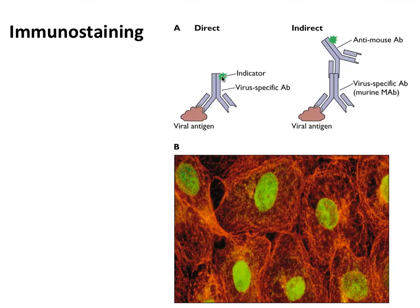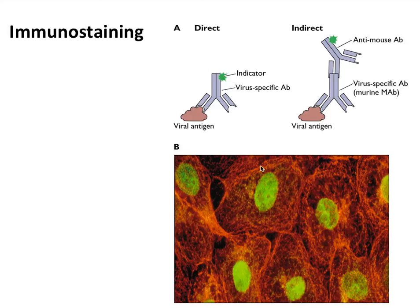You can label the antibody itself with a fluorescent indicator that fluoresces under ultraviolet light, or use the indicator on a second antibody that binds to the first, which is in turn bound to the viral antigen. The picture shows an antibody labeled with a fluorescent indicator that appears green under UV light, revealing viral proteins in the nucleus. This cell monolayer was stained with two antibodies simultaneously — one against the viral protein and one against a cellular protein marking the cytoskeleton, labeled with a different color indicator in red.